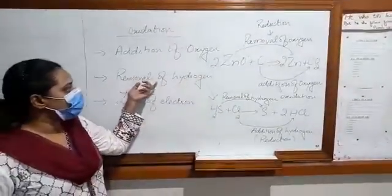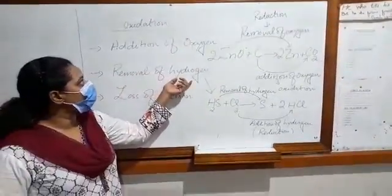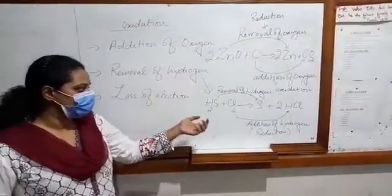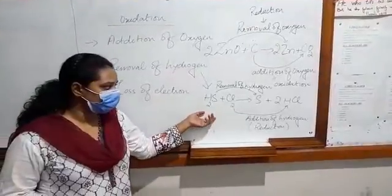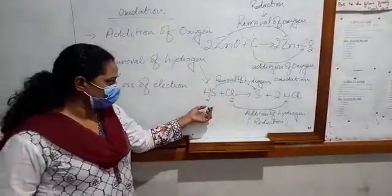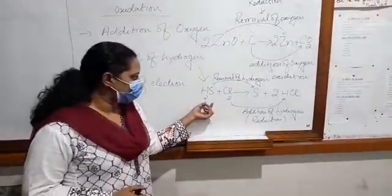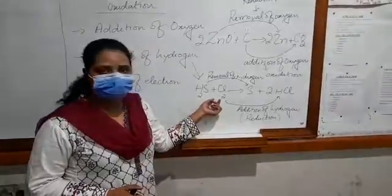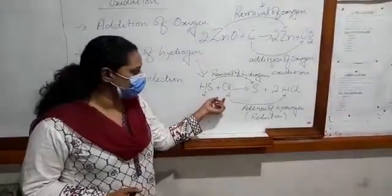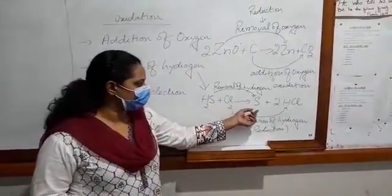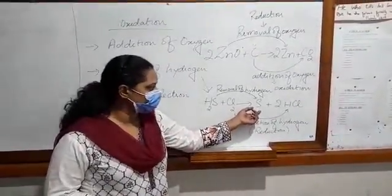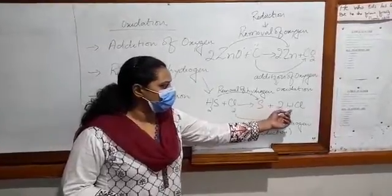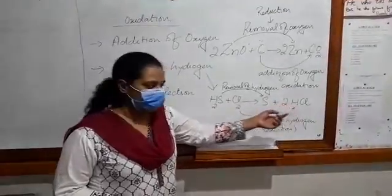The second definition is: removal of hydrogen is called oxidation. We are going to deal with a chemical reaction — here hydrogen sulfide is reacting with chlorine, and the products we are getting are sulfur and hydrochloric acid.